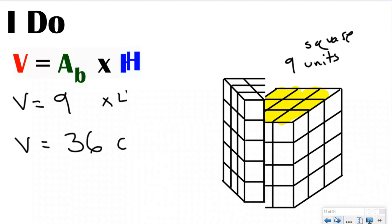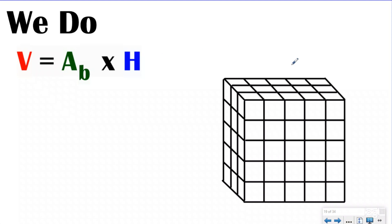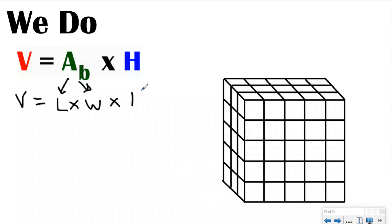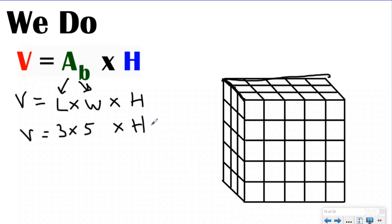Now let's look at a we-do problem. Here I have the same formula: volume equals area of the base times the height. Except now I don't want to count the base one by one, so I'll break apart the area of the base into length times width, then multiply by the height. The width is three and the length is five, so three times five equals 15. I still need to multiply by the height. Counting the layers gives 1, 2, 3, 4, 5 — five layers of 15. So 15 times five gives me 75 cubic units.